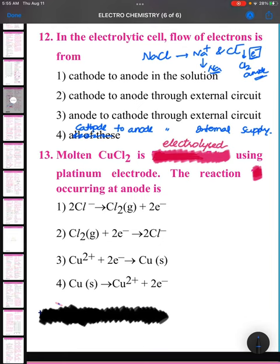In the electrolytic cell, flow of electrons is from - actually, there is no net electrons flow. Only ions will be moving from one to another one. And it is done on the cost of electricity. By using electricity, electrolytic cell will be working.